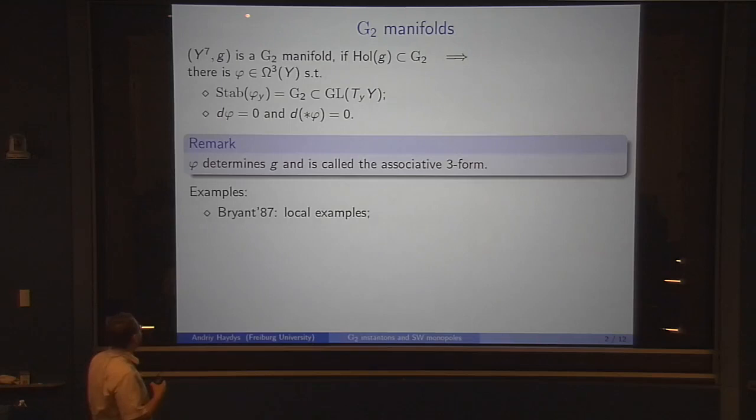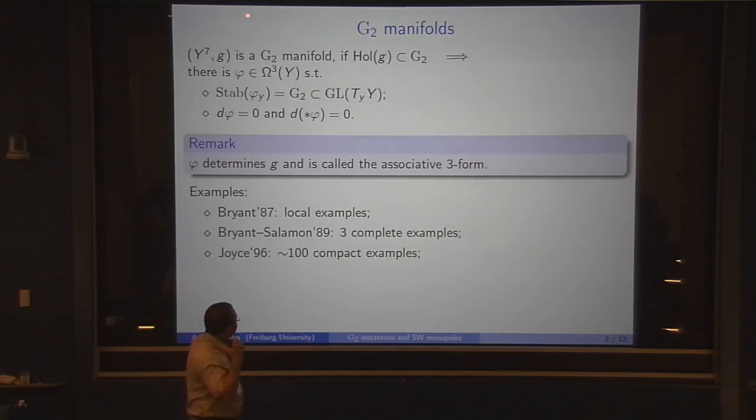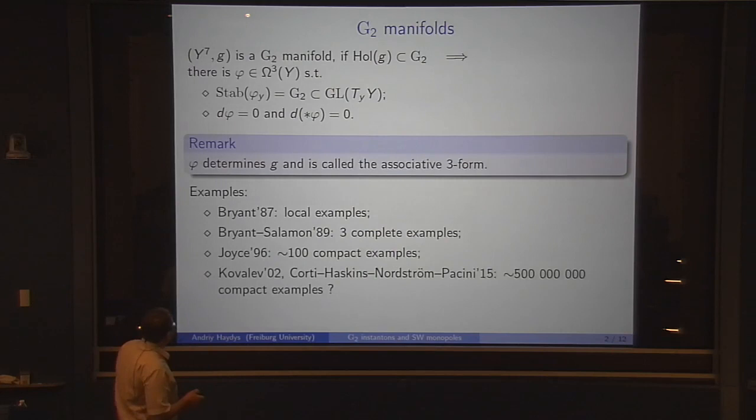Let me give you a brief history of creating examples. First examples, local ones, were discovered by Bryant in 87. Shortly afterwards, Bryant and Salamon constructed three complete examples. Then around 96, Dominique Joyce discovered a number of compact examples. By topological invariants, this is roughly 100 different compact examples, but potentially much more there.